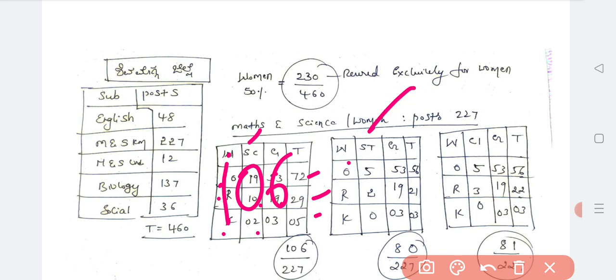ST is 15. Others 5, general is 53, total is 56. Rural is 2 plus 19, 21. 2 plus 19 is 3. Total is 80 seats are reserved out of 227 for ST is rural.